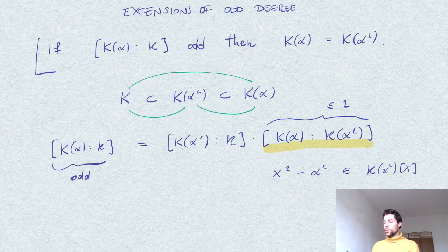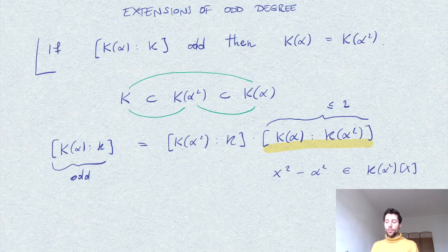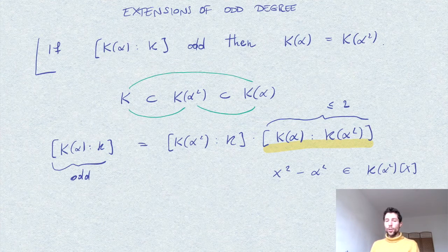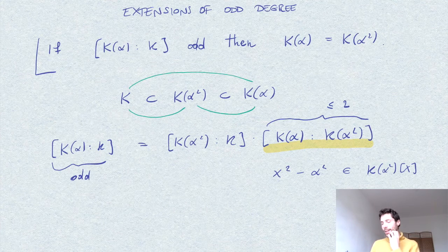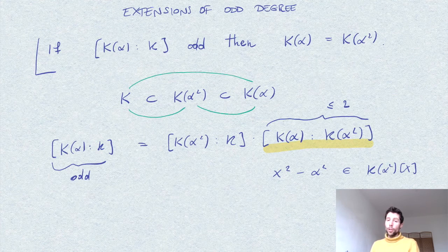So of course, we cannot have degree two here on the right, and we must have degree one. And therefore, α is actually a root of a linear polynomial, and therefore it's already in this field.